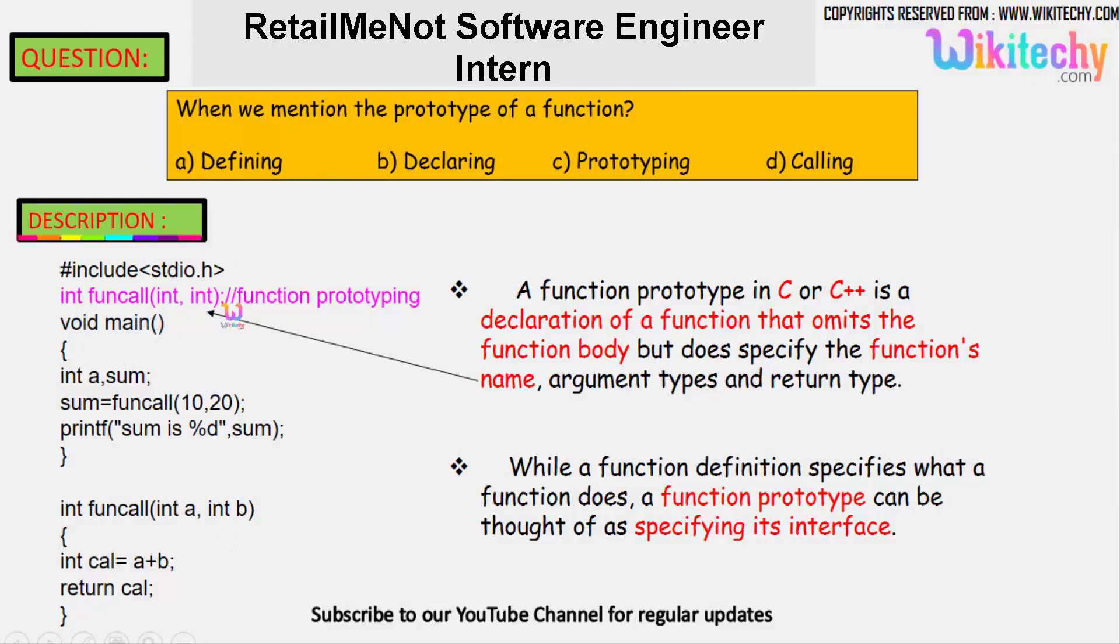Here is the program. A function prototype in C or C++ is a declaration. You can see there is a function call. It's declared here with two parameters and it's returning something. This is called in the main function. The function call is a function which is called in the main function.